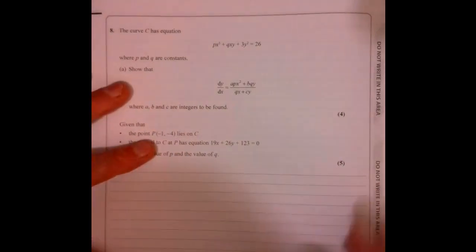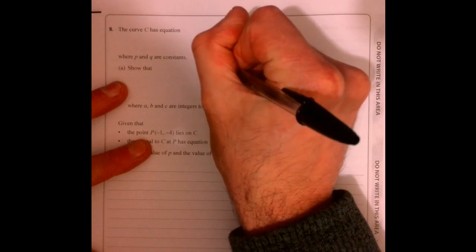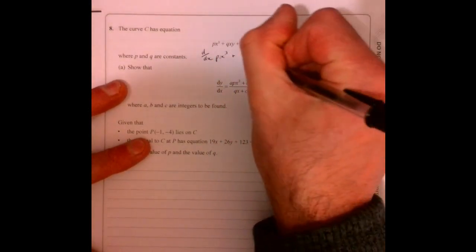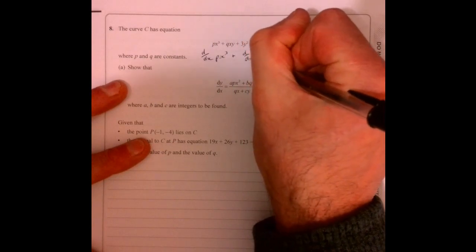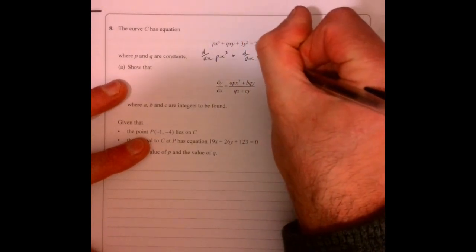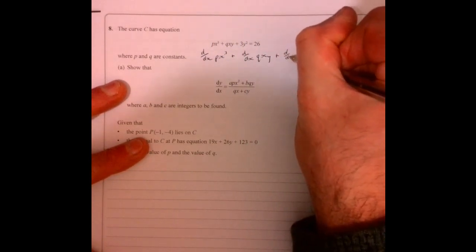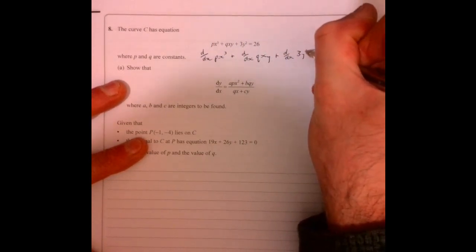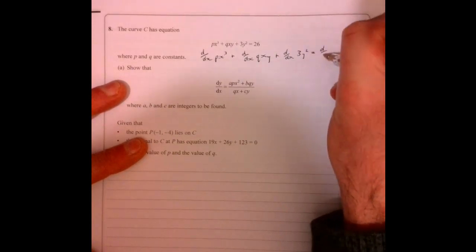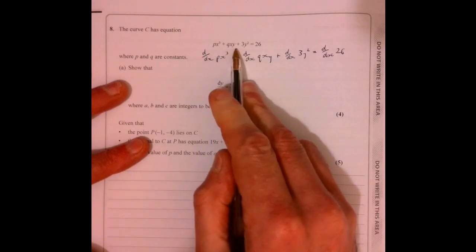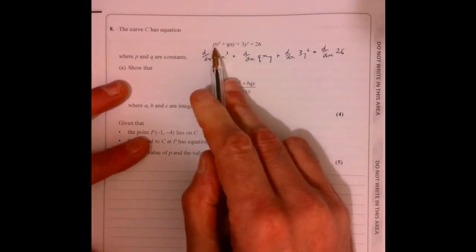Question eight, now this is implicit differentiation so the best way of doing this is just to write out each bit separately, just divide it all up. And the reason this is difficult is because I've got x's multiplied by y's and I've got y's and I've got x's.